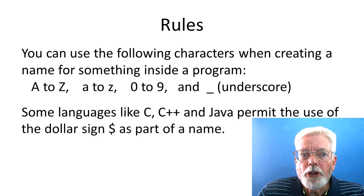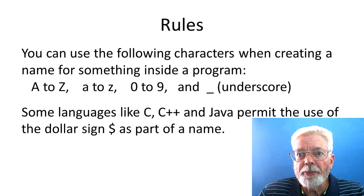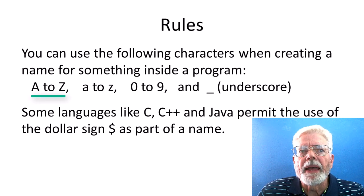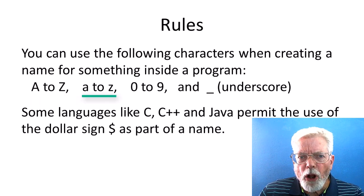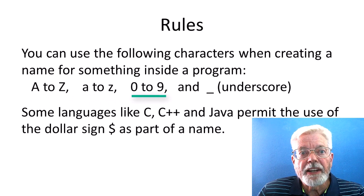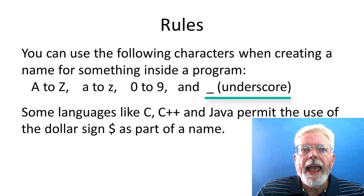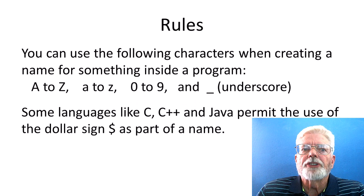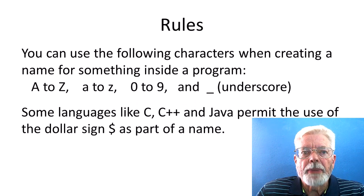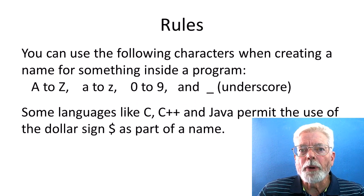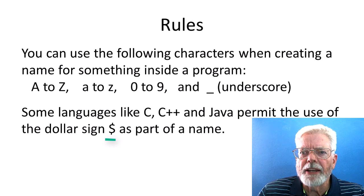You can use the following characters when creating a name for something inside a program: big A to big Z, small a to small z, the digits 0 to 9, and the underscore character. Some languages like C, C++, and Java also permit the use of the dollar sign as part of a name.